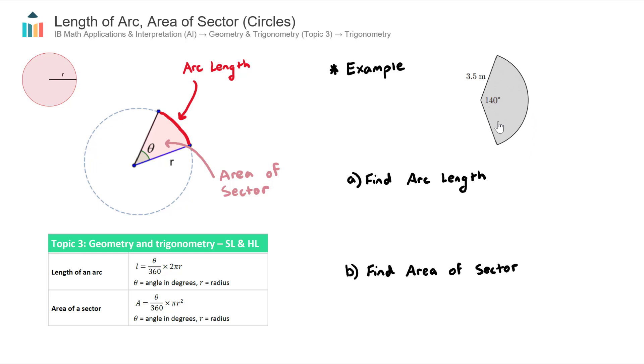This question from the question bank is a sprinkler positioned at the center of the circle that projects water a total distance of 3.5 meters and swivels at an angle of 140 degrees. We want to find the arc length.